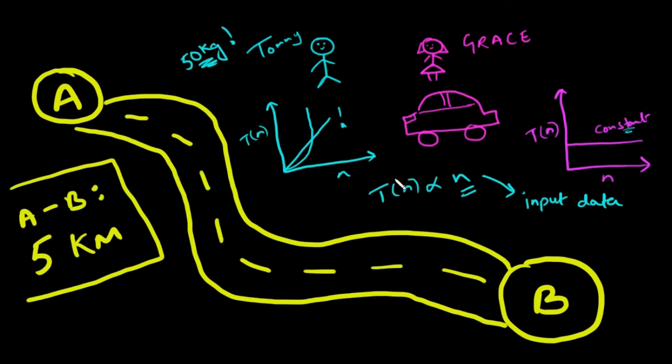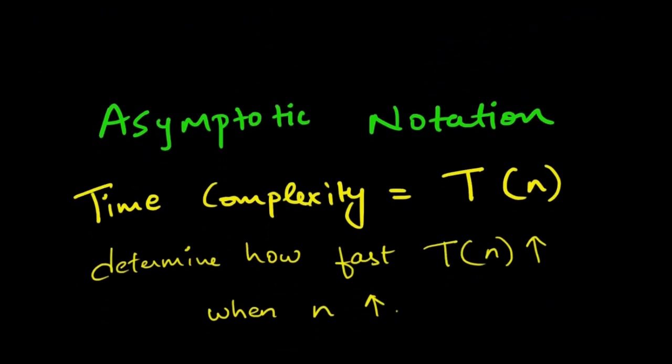Order of growth will help us to compute the running time with ease. So I think this would be a perfect time to introduce something called asymptotic notation.